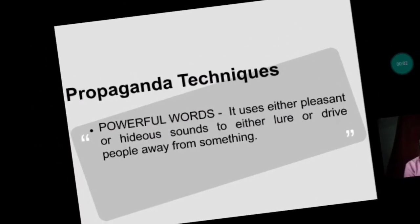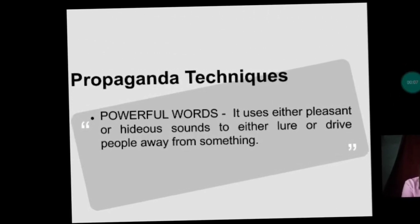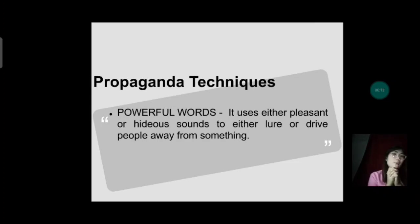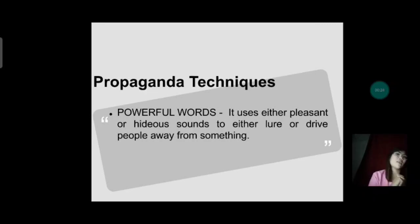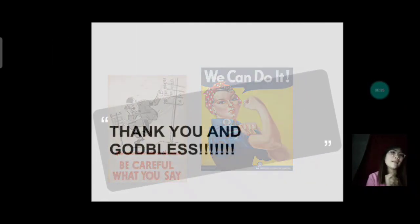The last one is powerful words. It uses either pleasant or hideous sounds to either lure or drive people away from something. A great example is a shampoo commercial using words like 'shiny, smooth, and silky hair' to convince viewers to buy their shampoo. That is an example of propaganda techniques under powerful words. That is all for today. Thank you!